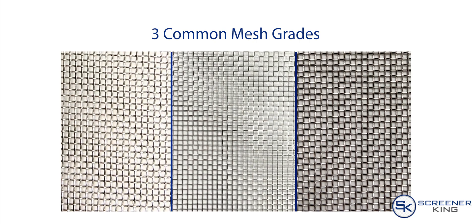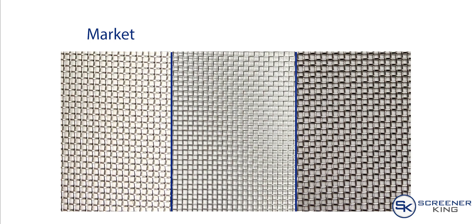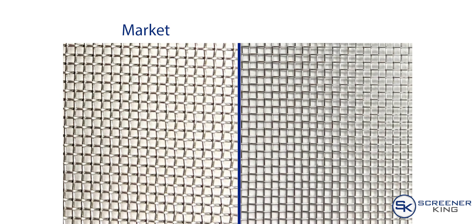There are three common commercially available grades of wire used to weave stainless steel mesh: market grade wire mesh, which is the thickest wire; tinsel bolting cloth, which is the thinnest; and mill grade, which is a middle thickness and available in the fewest number of mesh sizes. In this side-by-side comparison of market grade 20 mesh to tinsel bolting cloth 20 mesh, you can clearly see the difference in the thickness of the wire and the resulting opening size.